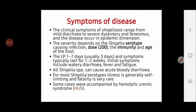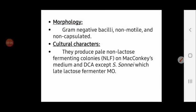Some cases are accompanied by hemolytic uremic syndrome — previously discussed in the context of enterohemorrhagic E. coli — and some strains of Shigella can also cause this complication. Regarding morphology, as with all Enterobacteriaceae, Shigella are gram-negative bacilli. They are non-motile, which distinguishes them from other Enterobacteriaceae, since all Enterobacteriaceae are motile except Shigella and Klebsiella. They are also non-capsulated.